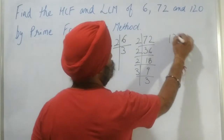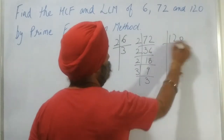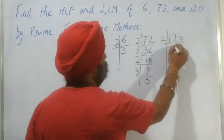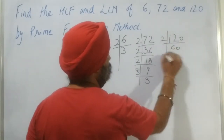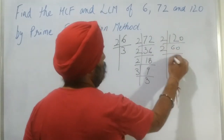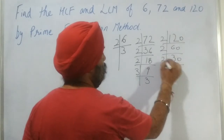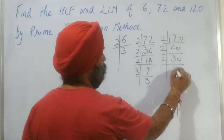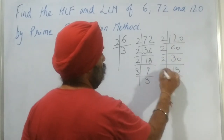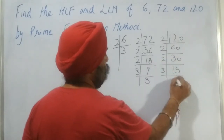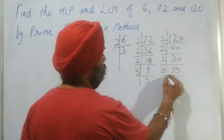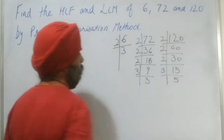Now the next one is 120. Dividing: 2 gives 60, then 30, then 15, then 3 and 5.